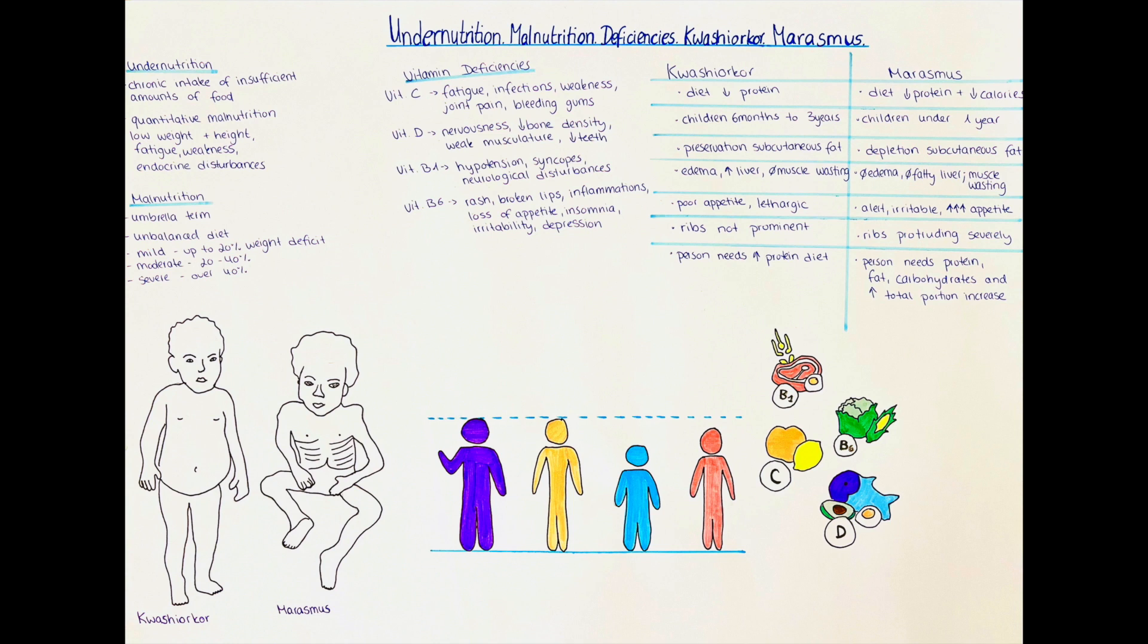Pediatric undernutrition affects around five to ten percent of young children and protein energy malnutrition short PEM is the leading cause of death in children under the age of five. Protein energy malnutrition is a group of conditions caused by different degrees of protein and calorie deficiency. Primary PEM is caused by social or economic factors that result in a lack of food, so in most cases poverty.